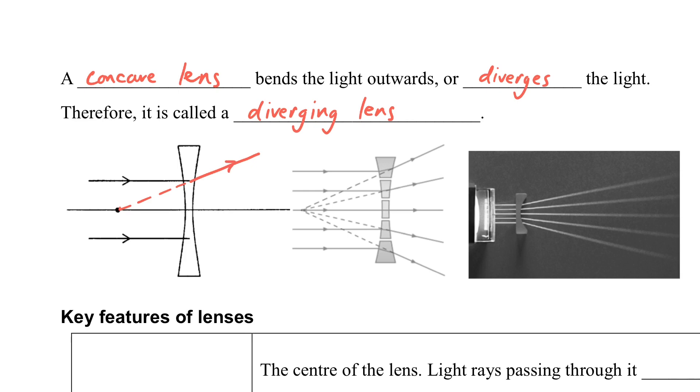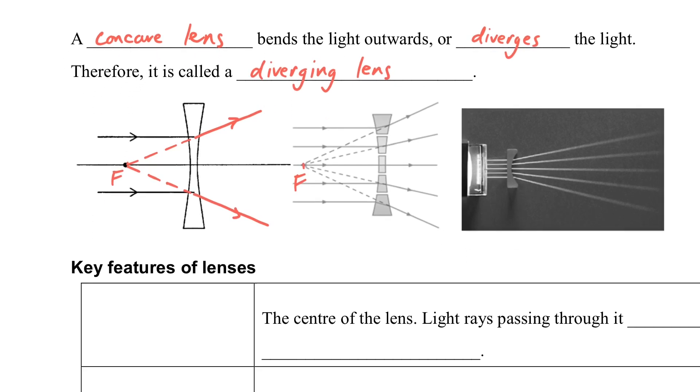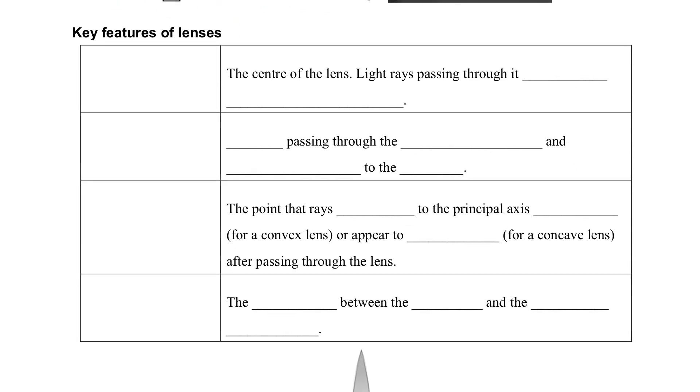So we call it the diverging lens. You should be aware the diagram. The left-hand side of the lines are dotted lines because the light is not passed through at that direction, but just showing the direction only.